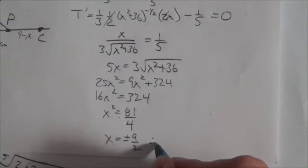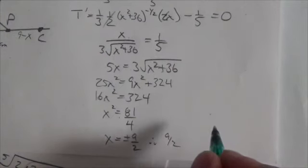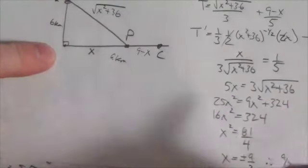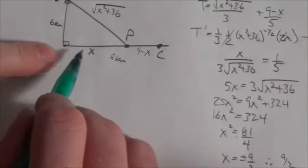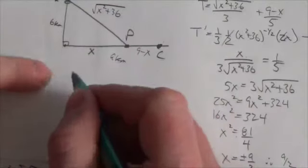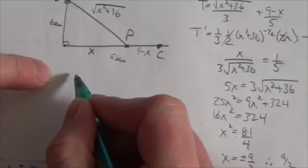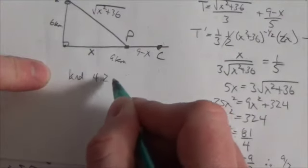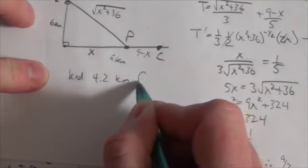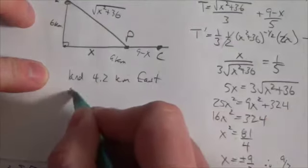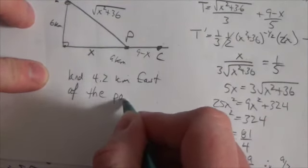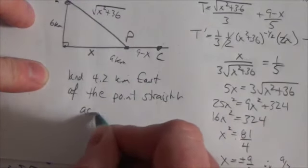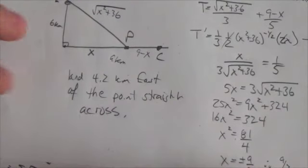So then the question is, where should he land? He should be landing 4.5 kilometers over, so halfway in between in this particular case here. Land 4.5 kilometers, I guess you might say, east of the point straight across. Yeah, anyway, there we go.